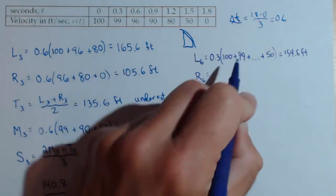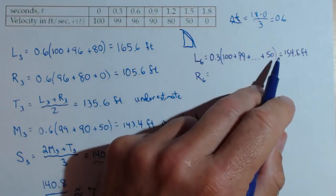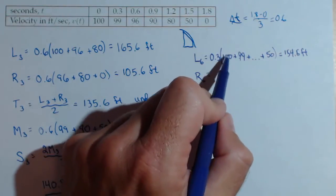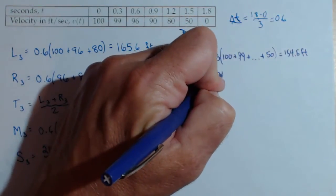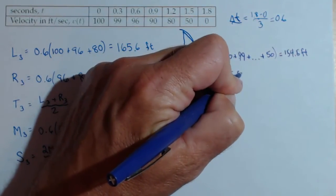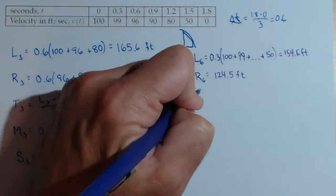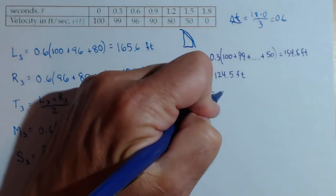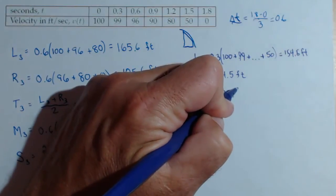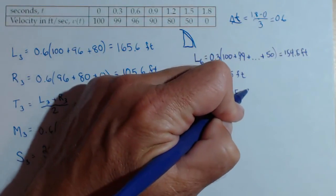R sub 6 is going to not use the 100 and go all the way to zero. So basically, we're going to remove the 100 from here, but do the same calculation. That comes out to be 124.5 feet. We can average those two to get the trapezoid rule with six. Trapezoid rule comes out pretty accurate with six, 139.5 feet.